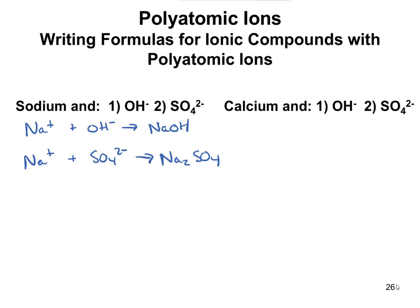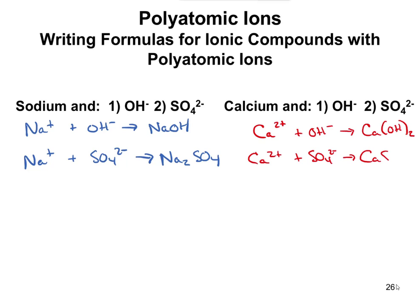For calcium with OH minus: calcium has a 2+ charge, and we need two OHs to balance it out. So we write Ca(OH)2, with parentheses around OH and a subscript of 2. Finally, Ca 2+ plus SO4 2-: since the charges are equal, we combine them directly and write CaSO4 — calcium sulfate. That's how you write formulas for these ionic compounds.